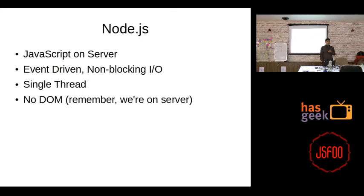Once I/O completes, the thread resumes, but if the next operation is also blocking, you block again. If you have a heavily networked application talking to many services or databases, you'd have a lot of blocking I/O. Non-blocking, event-driven I/O solves this. In Node there's an event loop — a single thread running in the background, like a UI thread in desktop applications.